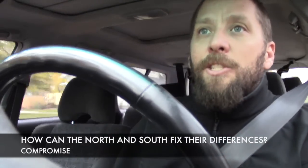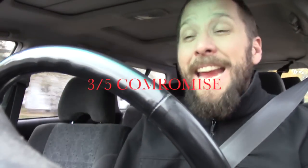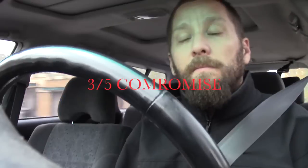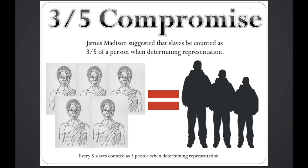What they ultimately decided was: what if we count slaves as three-fifths of a person? Not a whole person, but three-fifths of a person. That way the south can have more representation in Congress, but only three-fifths of the slave population would be counted. The south said okay, and the north said they're not going to fully get their way, we're not going to fully get ours — so a slave is counted as three-fifths of a person when counting population to determine representation in government.